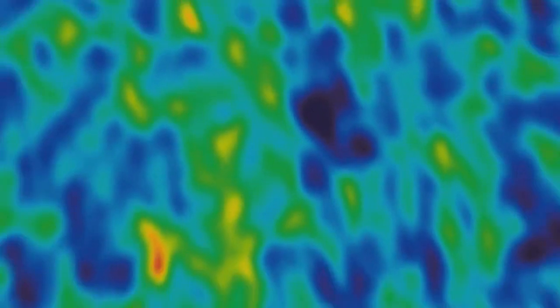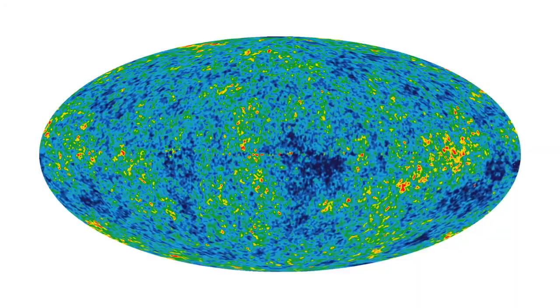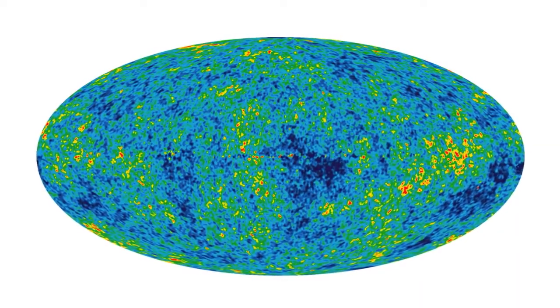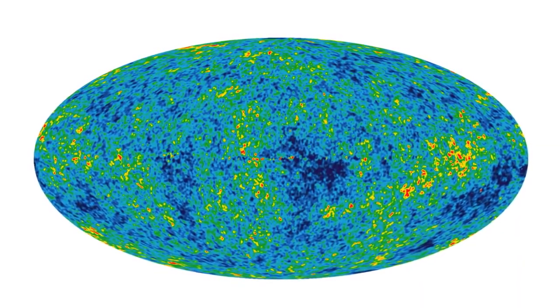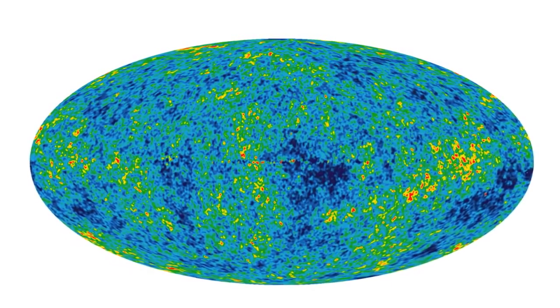So to measure the shape of the universe, all we need is a triangle, a really big one, one that covers the entire universe. The all-sky map of the cosmic microwave background provides us with just such a surface within which to measure our triangle.